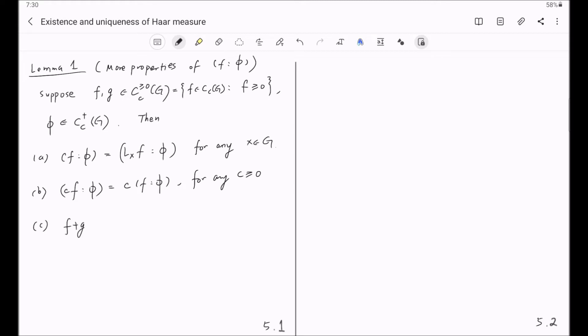Third, if we take the sum of F and G and consider its Haar covering number with respect to phi, you get an inequality. This is less or equal to F column V plus G column V. And we can give a name for properties B and C. We can call it positive sub-linearity.